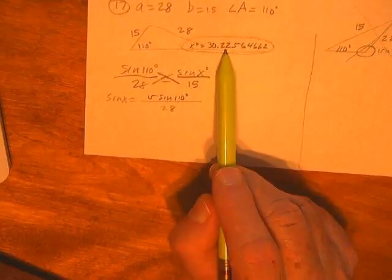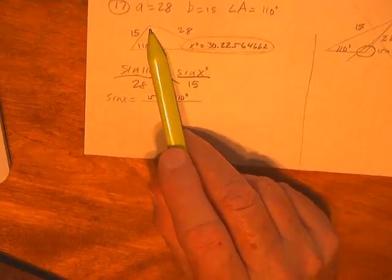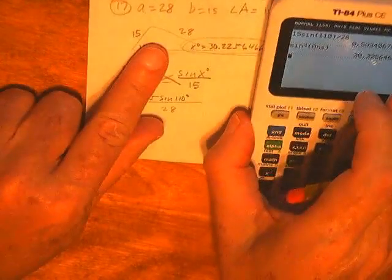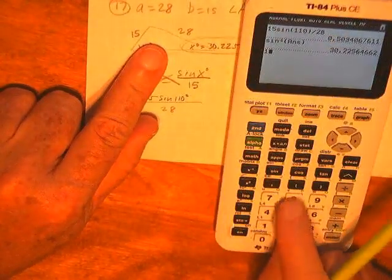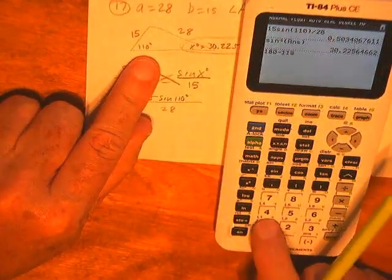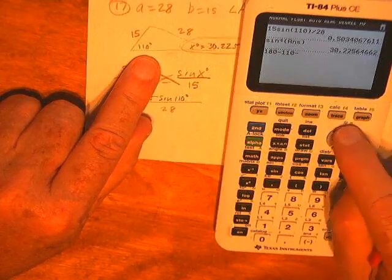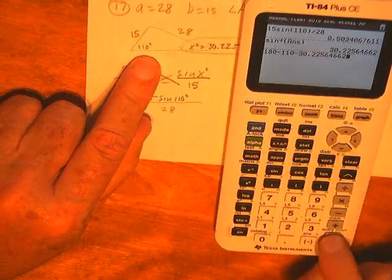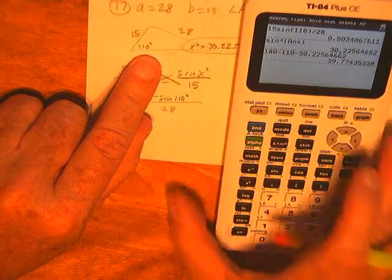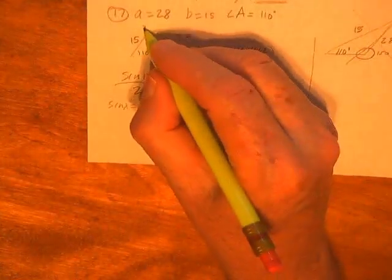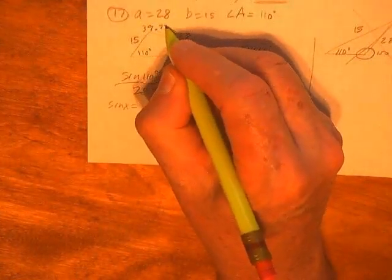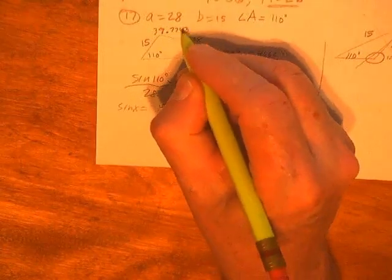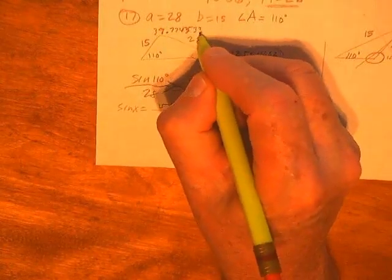All I've got to do is finish this one up, and I'm in good shape. And since I know this angle and this angle, I can subtract and find that one. Okay, so let's do that. Let's go grab that angle. Here's the other angle up here, 39, 77, 43, 53, 38.